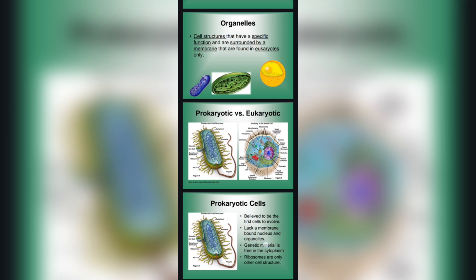Prokaryotic cell structures include: cytoplasm, nucleoid region, cytoplasmic membrane, ribosomes, and pili.